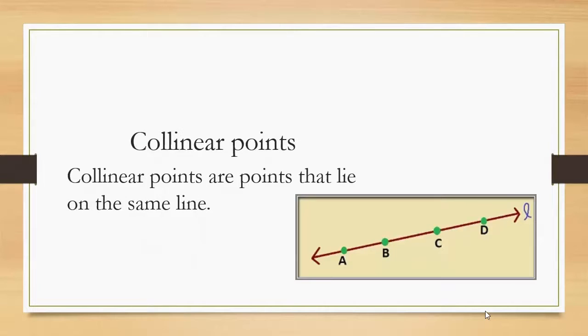Collinear points. Collinear points are points that lie on the same line. So in looking at this picture, A, B, C, D are all collinear points and lie on the line L.